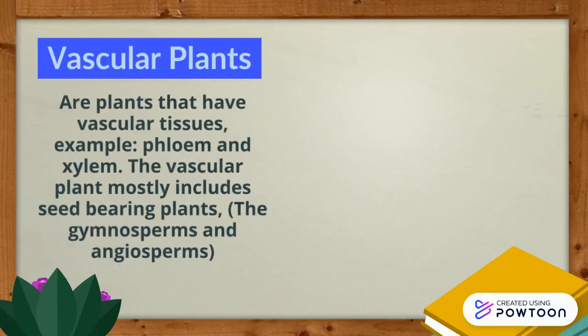Vascular plants are plants that have vascular tissues, e.g. phloem and xylem. Vascular plants mostly include seed-bearing plants, like endosprings and angiosprings.